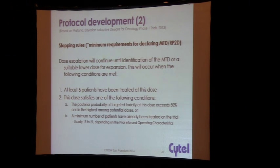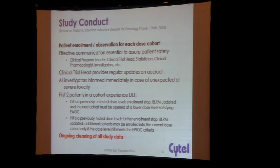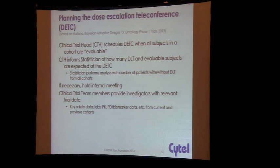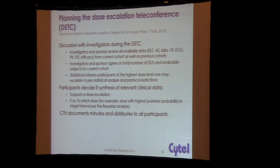During study conduct, communication is important — you work as a team and give regular updates. The data gets cleaned on an ongoing basis. There are dose escalation meetings where all the information gets brought together. The statistician uses up-to-date data to provide a model-based recommendation, and then the team discusses what the recommendation will be based on all the relevant data, which then gets communicated and the rest of the trial can go on.